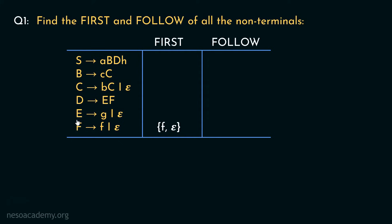Similarly, in the First of E, look at the production rule of E. E can be rewritten as lowercase g or epsilon. Therefore, in the First of E, we will have the symbols lowercase g and epsilon.